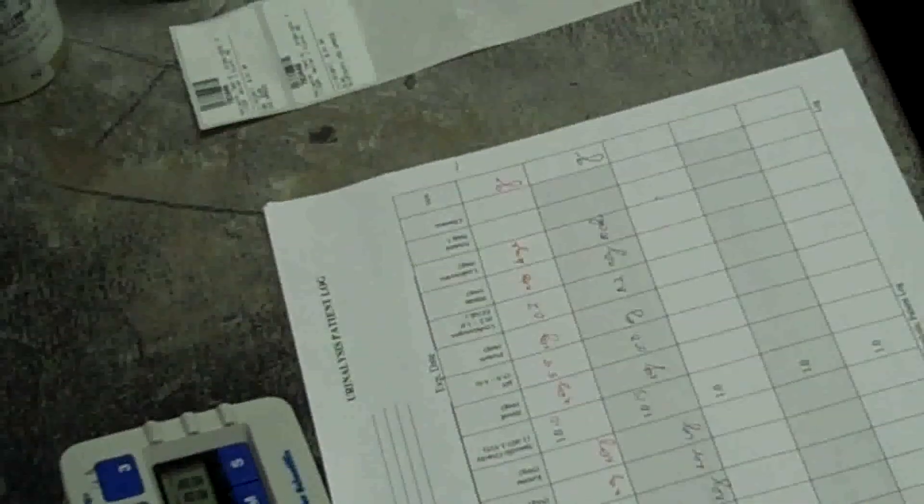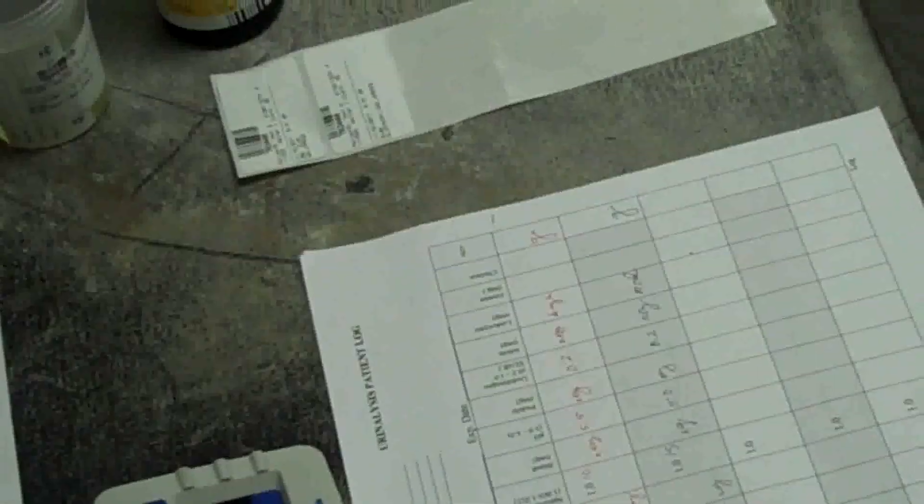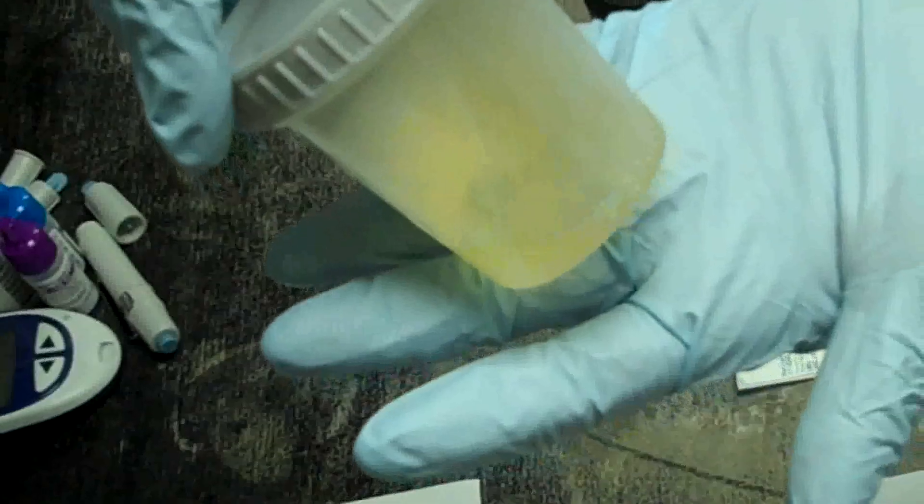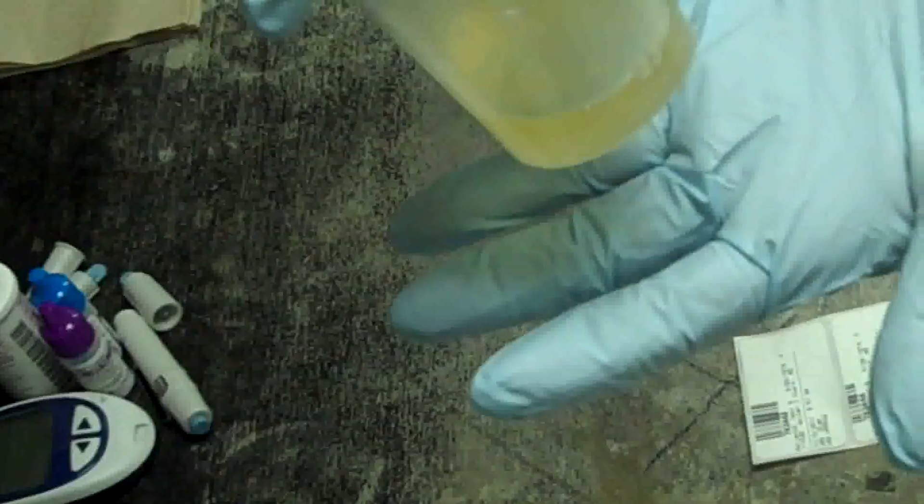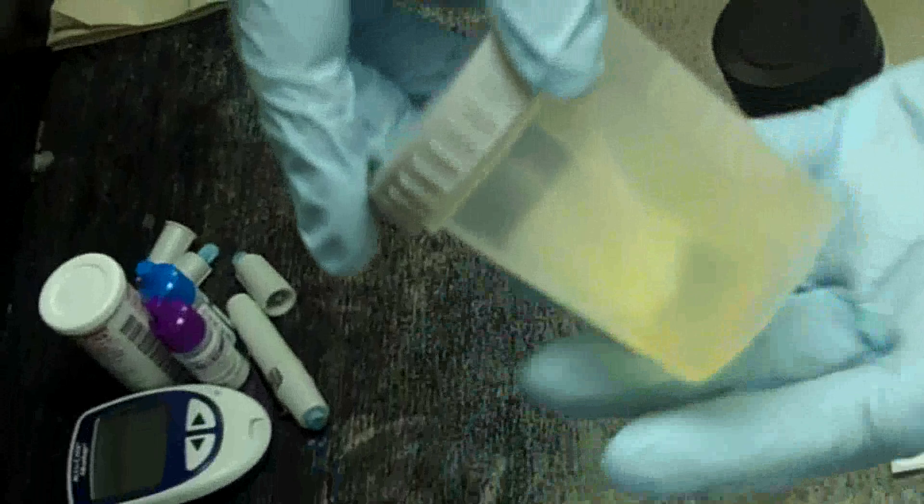Discard our dipstick. Shut off the timer. And let's record our urine color and clarity. Swirl the urine. The urine color is yellow. If we can see through the urine and read through the urine, then it's clear.